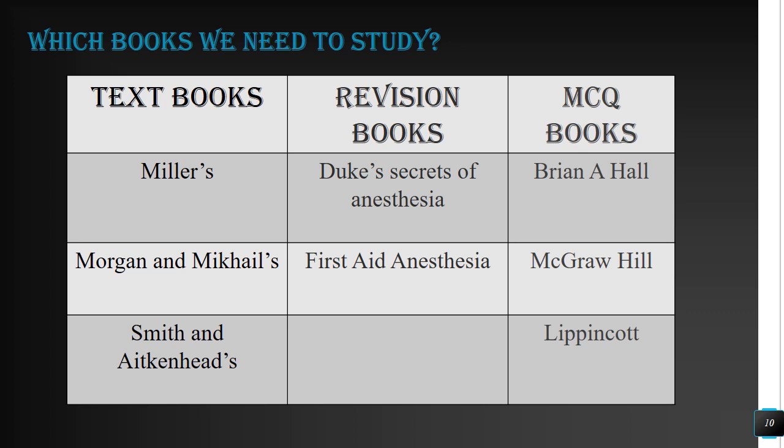Smith is a very good book especially for pharmacology, but you don't have to use it as a primary book — you should combine Morgan and Mikael with Smith. The next category is revision books, and here I have two books: Duke's Secrets of Anesthesia and First Aid Anesthesia.